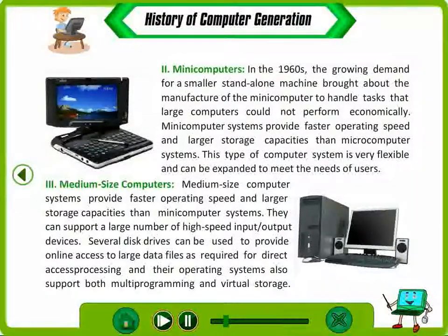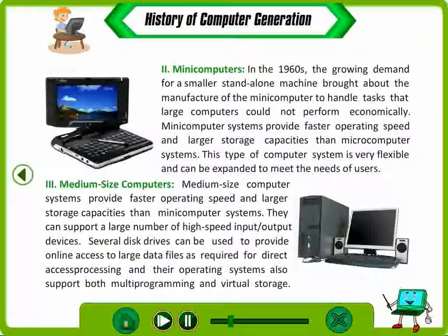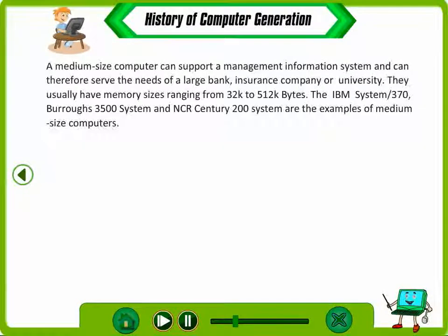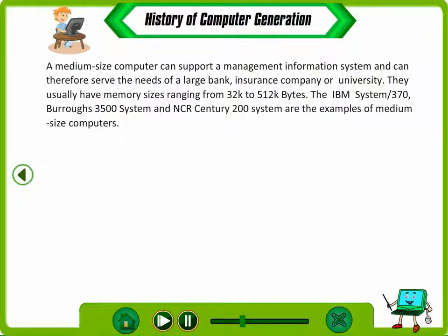Medium-Sized Computers. Medium-sized computer systems provide faster operating speed and larger storage capacity than many computer systems. They can support a large number of high-speed input or output devices. Several disk drives can be used to provide online access to large data files. Their operating systems also support both multiprogramming and virtual storage. A medium-sized computer can serve a large bank, insurance company or university. They usually have memory sizes ranging from 32K to 512K bytes. Examples include the IBM System 370, Burroughs 3500 system and NCR Century 200 system.